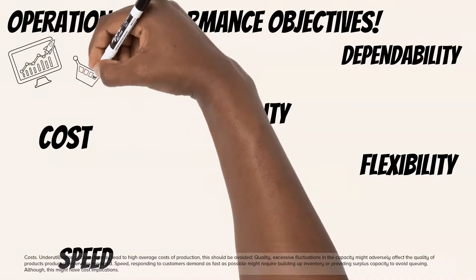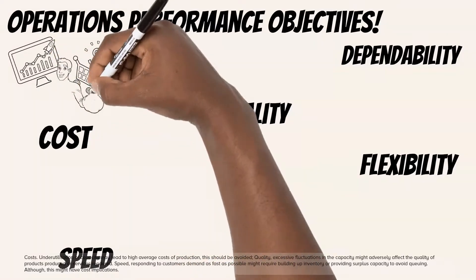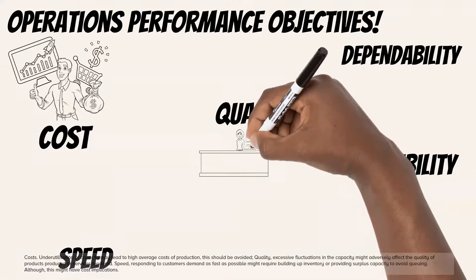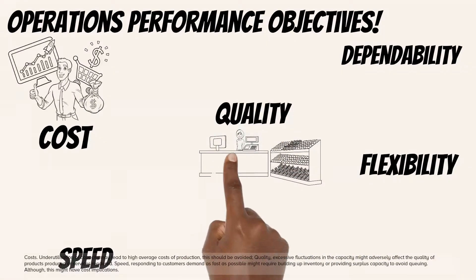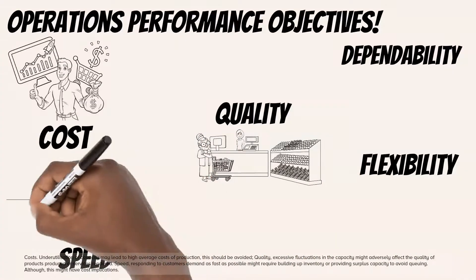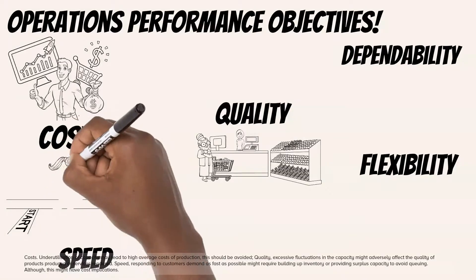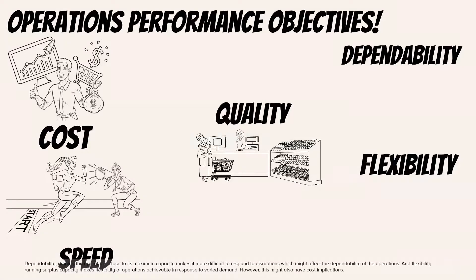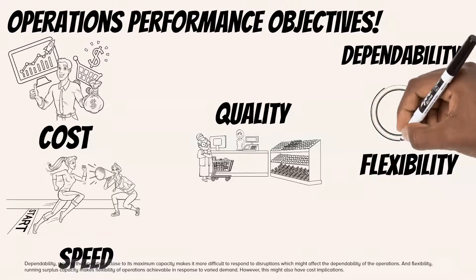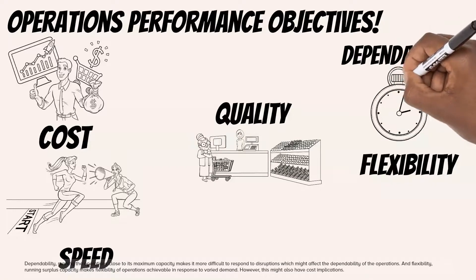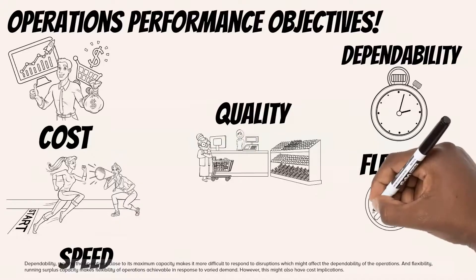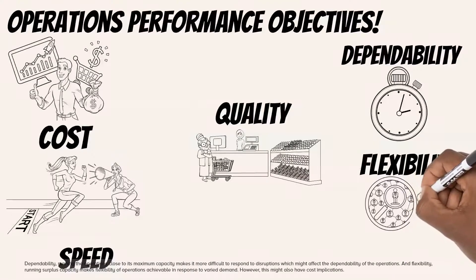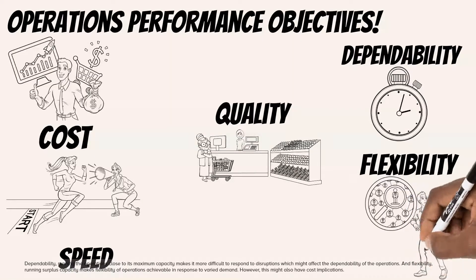Underutilization of capacity may lead to high average costs of production — this should be avoided. Excessive fluctuations in capacity might adversely affect the quality of products produced or services rendered. For speed, responding to customers' demand as fast as possible might require building up inventory or providing surplus capacity to avoid queuing, although this might have cost implications. For dependability, running the operations close to its maximum capacity makes it more difficult to respond to disruptions, which might affect dependability. And for flexibility, running surplus capacity makes flexibility achievable in response to varied demand, though this might also have cost implications.